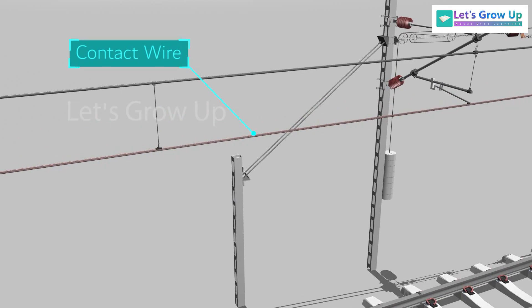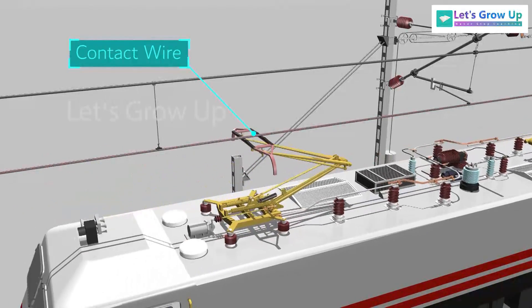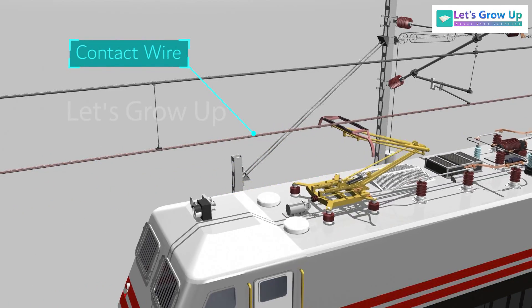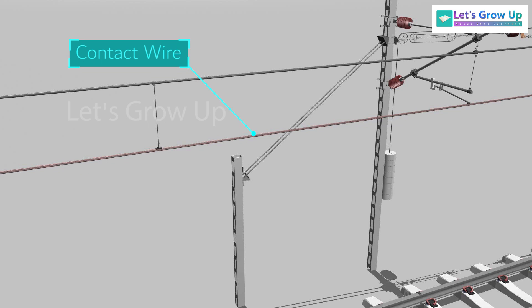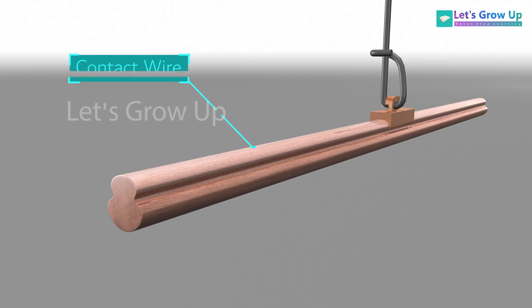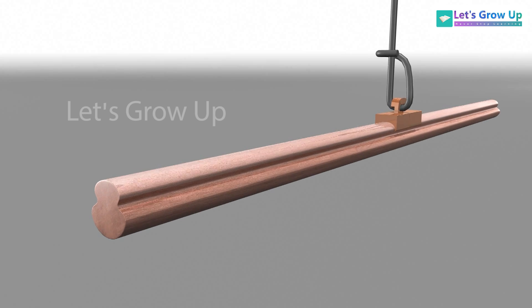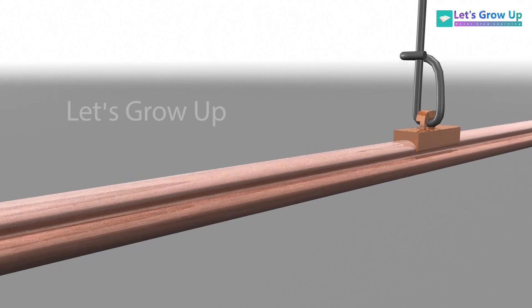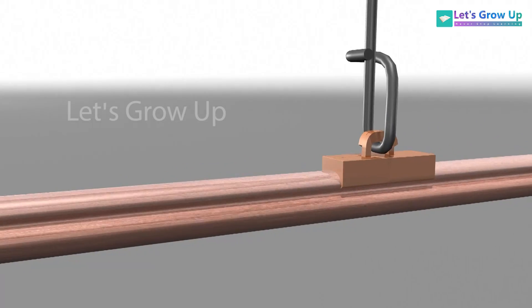This is contact wire. The basic application of contact wire is carrying current for railway traction. Mainly, the contact wire is made from copper or copper alloy with different cross-section areas, from 80 square millimeters to 193 square millimeters in different alloy forms.